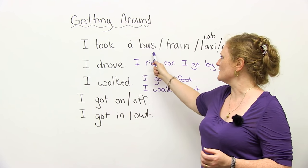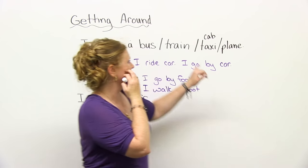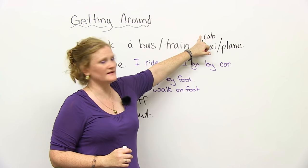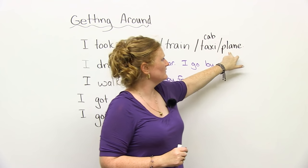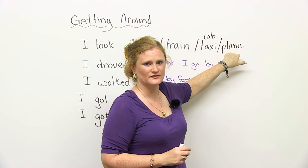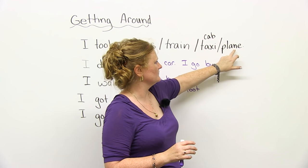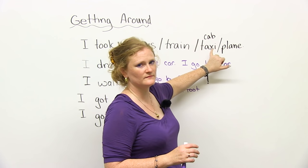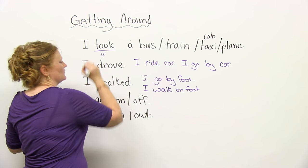Verbs. You can say I took a bus, a train, a cab or a taxi. Cab and taxi are the same. Or you can take a plane. So with all of these nouns - plane, cab, taxi, train, bus - you're going to use the verb took.